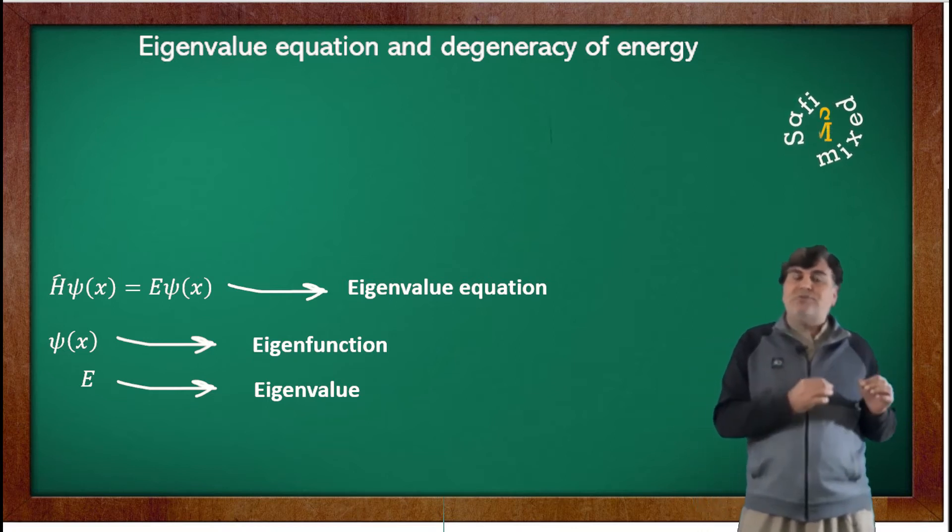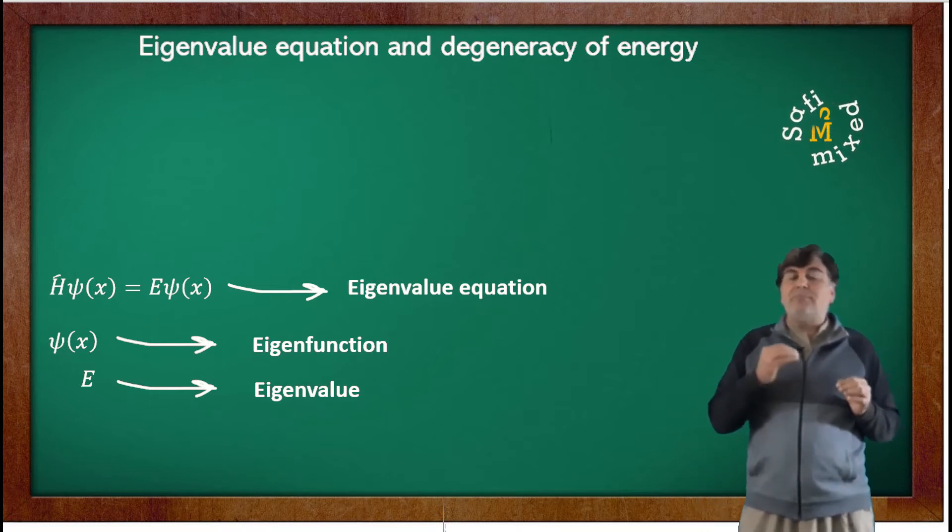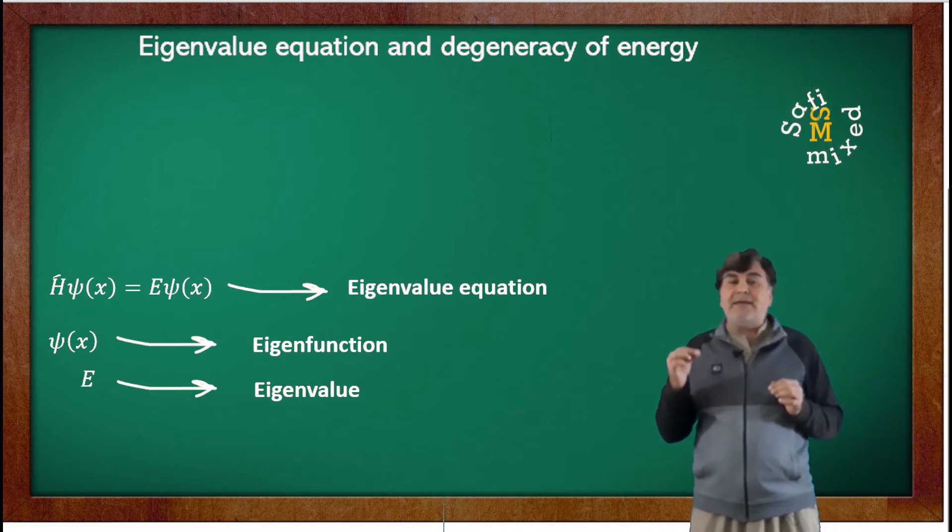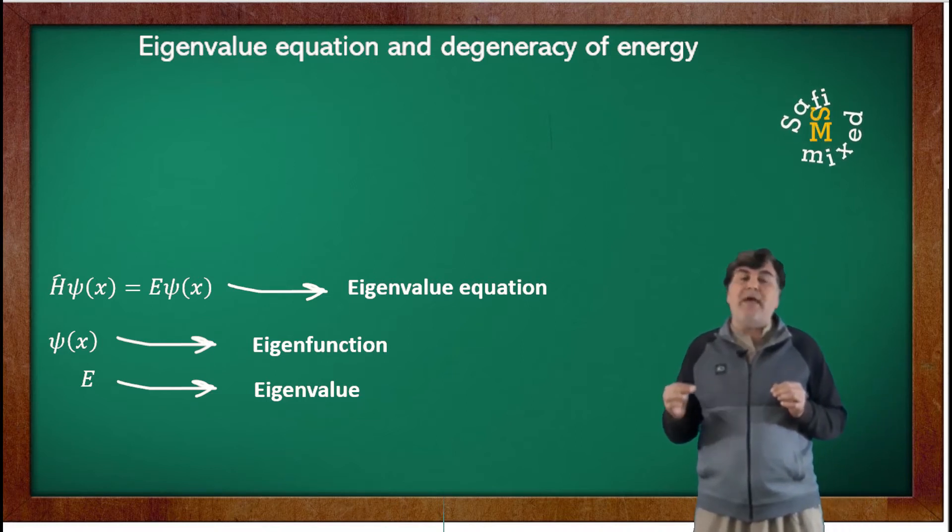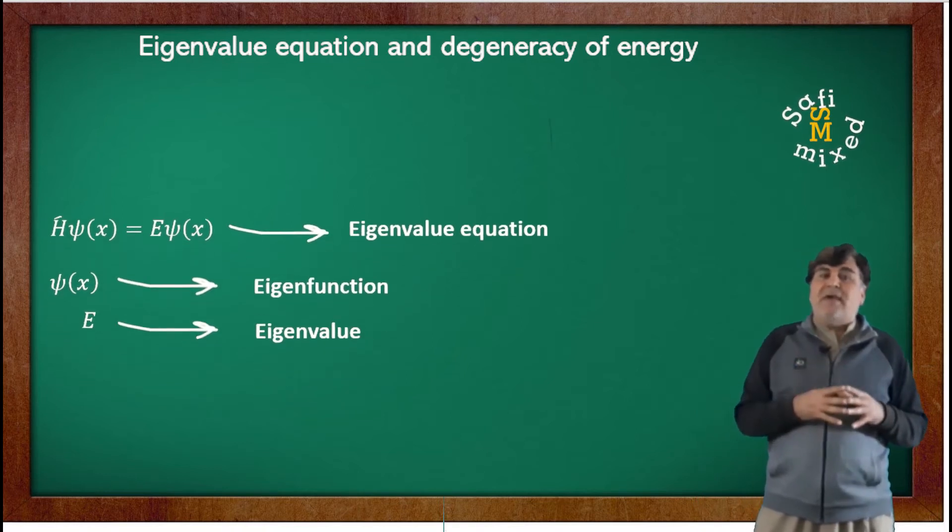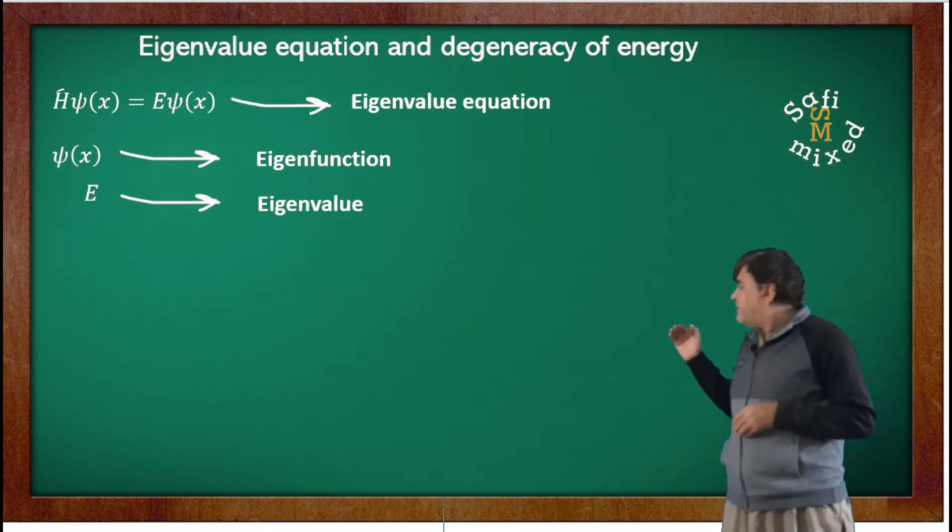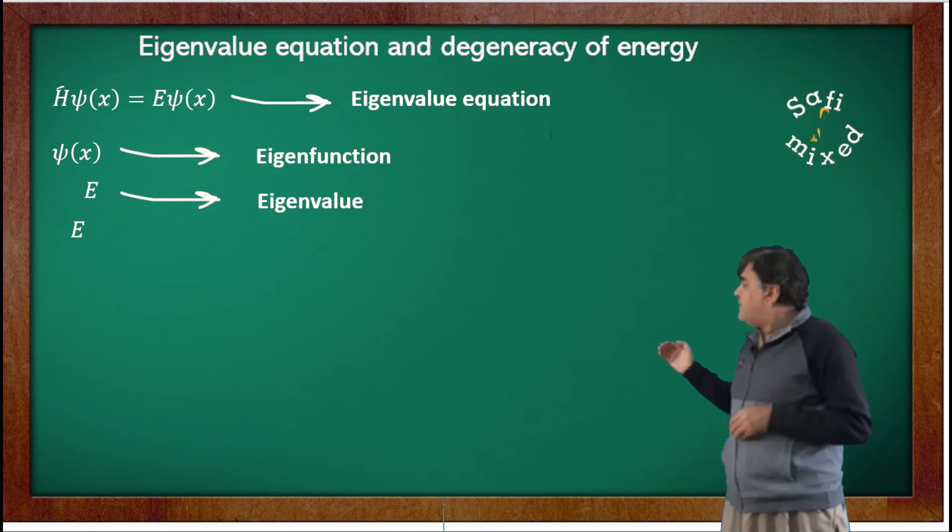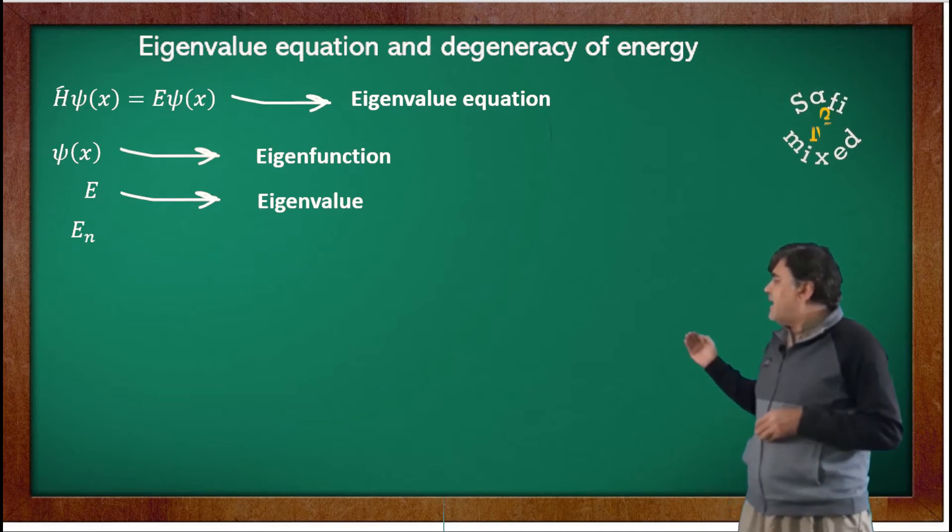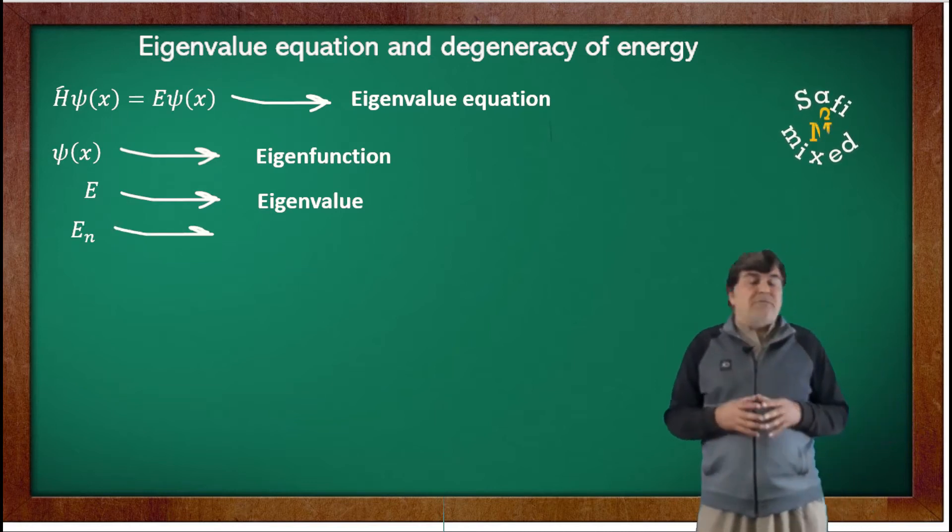We add a subscript to E and to the wave function ψ(x). That is, we write the eigenvalues as E_n and the wave function as ψ_n(x).